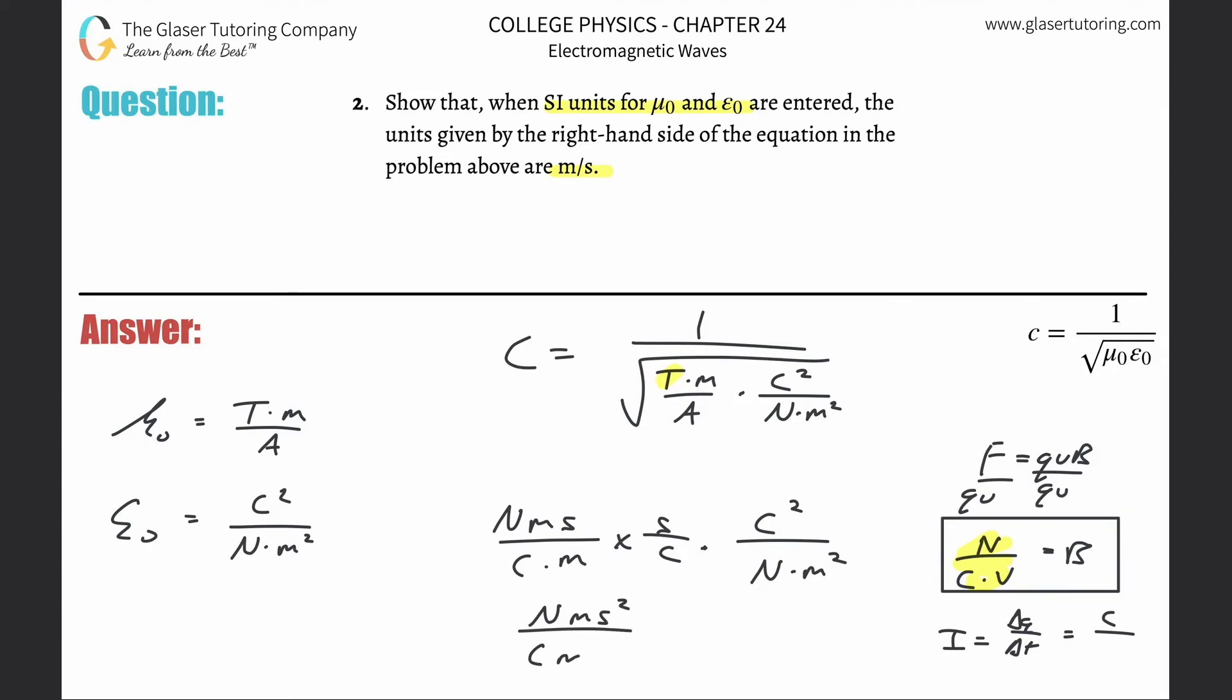This would become on the top: newton·meter·second squared over coulombs·meter·coulombs squared, because there's two coulombs. That's going to be multiplied by coulombs squared per newton·meter squared. Why don't we now start taking a look at how these units are going to cancel.